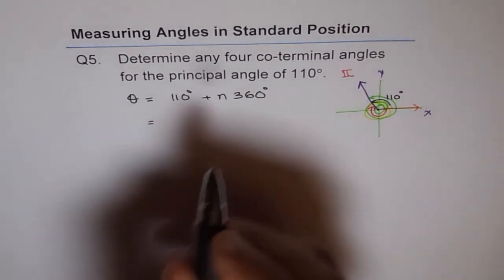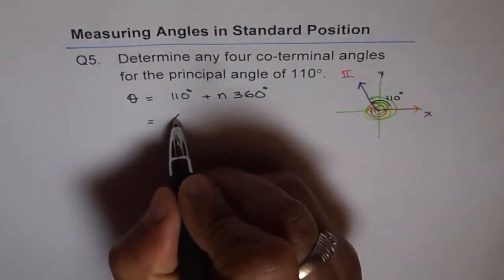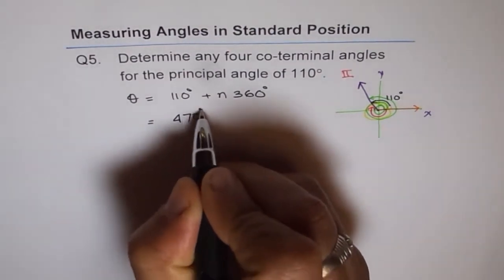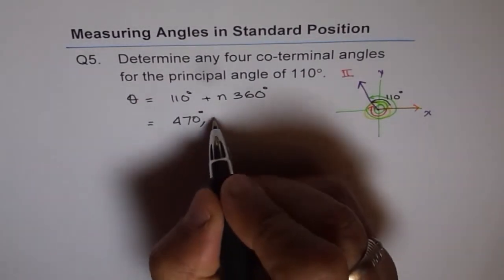If N is 1, we get 360. Let us do the plus side first. So we get 110 plus 360, which is giving us 470 degrees. And then again, we can add 360, and we get 830 degrees.